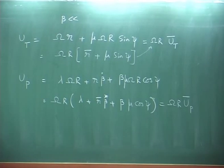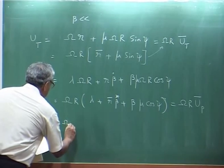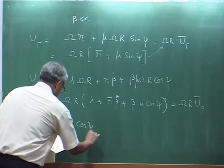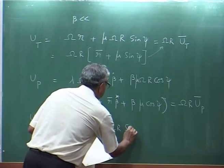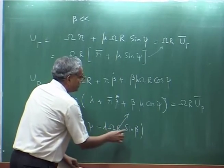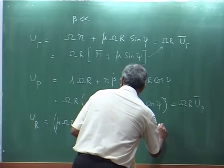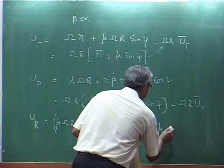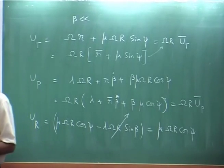Then you will have the u_R term. We neglect one particular term: mu omega r cosine psi multiplied by beta. Since beta is small, this becomes lambda times beta — a product of lambda and beta — I am neglecting that term. So this essentially becomes mu times omega r. That is all.